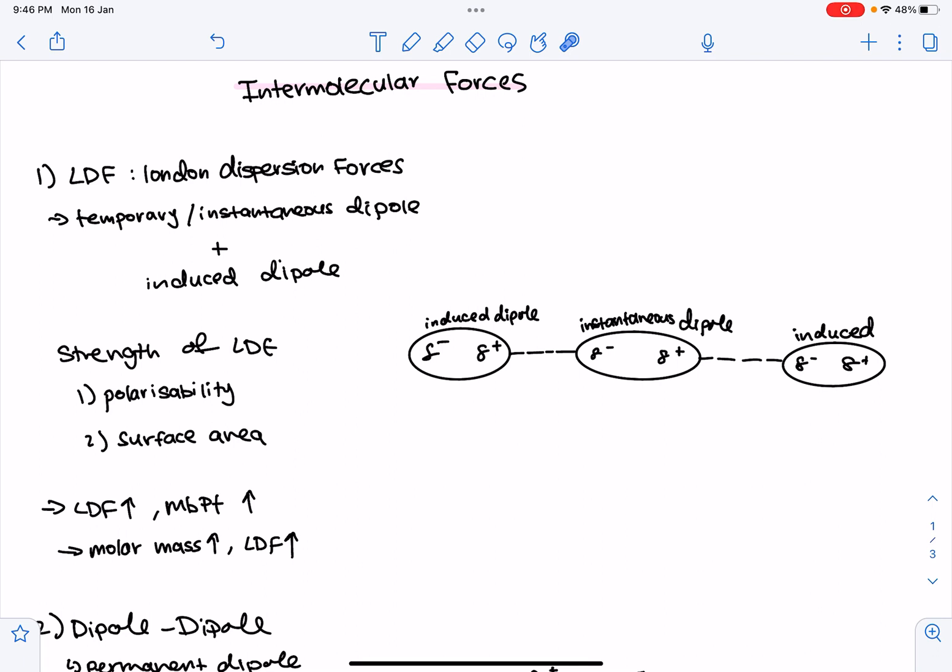So what are London dispersion forces? They're the weakest type of intermolecular force, and they exist between all atoms and molecules. They consist of temporary or instantaneous dipoles and an induced dipole. So as you can see in this diagram over here, this is how London dispersion force works. At a certain moment in time, the electrons may be concentrated on one side of the atom.